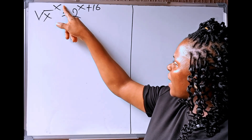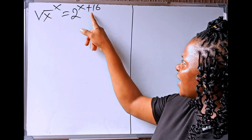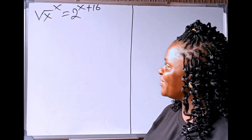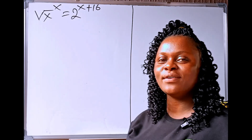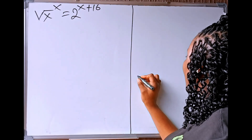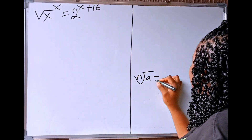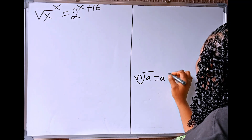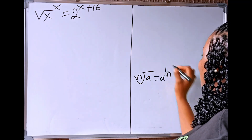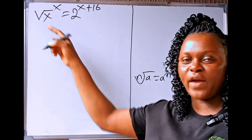We have square root of x to the power of x equals 2 to the power of x plus 16. Now, for us to solve this, recall that if we have n root of a, this is equal to a to the power of 1 over n. Now, if we apply this rule here in this square root of x,